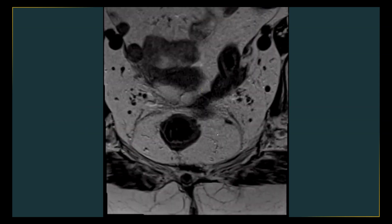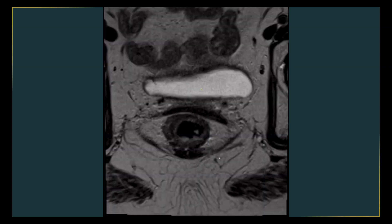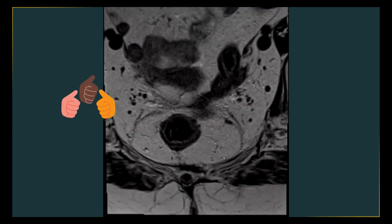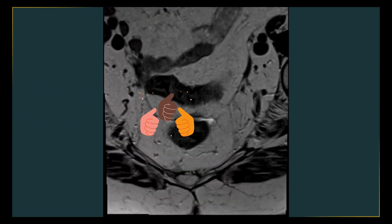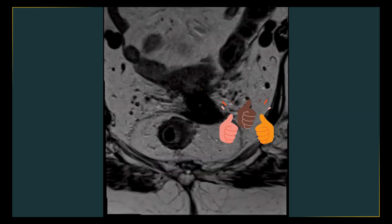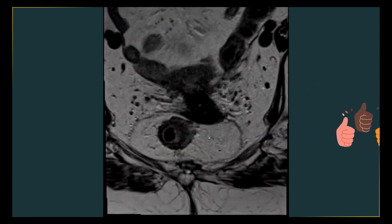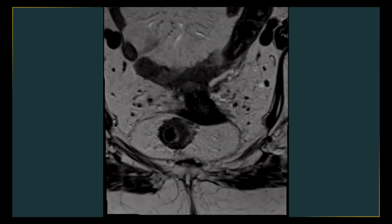The involvement of the mesorectal fascia does not affect the T stage of the tumor. Whenever the mesorectal fascia is involved, whether it's a T3 or T4 tumor, we just need to mention in the report that the MRF is positive — some people write CRM, but MRF would be a better expression. Understanding the thickness of mesorectal fat in various parts around the rectum's circumference is therefore very valuable.